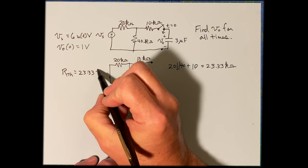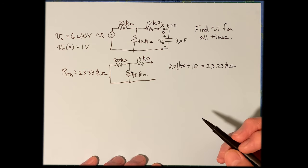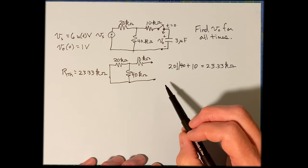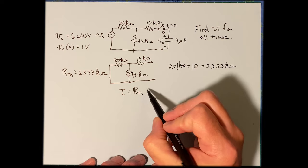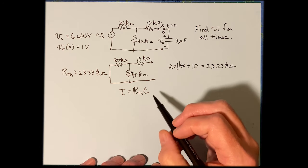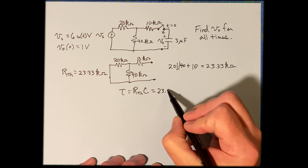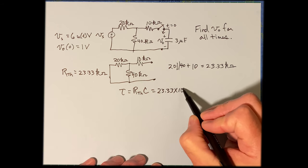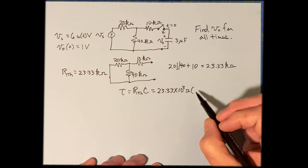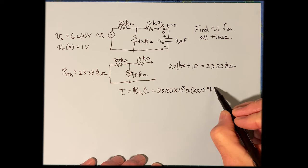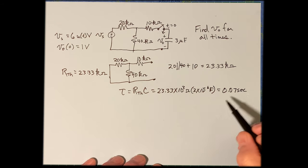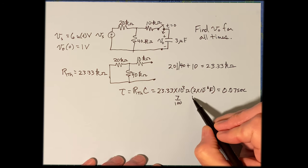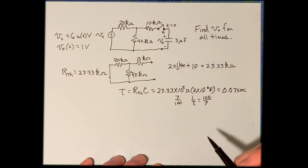So RTH is 23.33 kΩ. Now we can compute tau. Tau equals RTH times C, which is 23.33 kΩ times 3×10⁻⁶ farads. Multiplying those together gives 0.07 seconds, so 1/tau is 100/7.